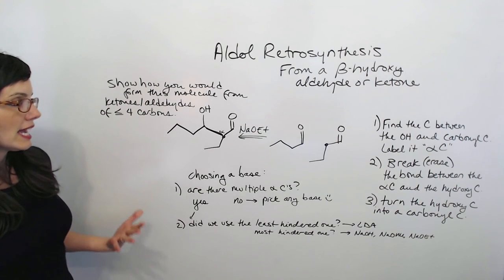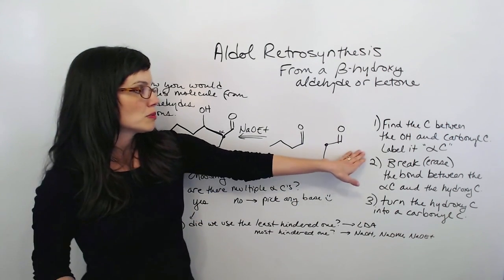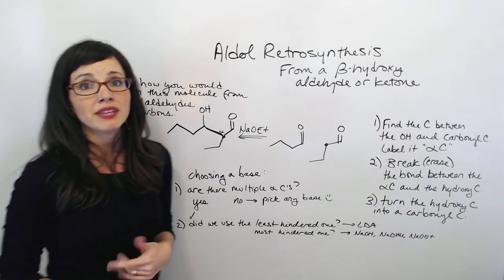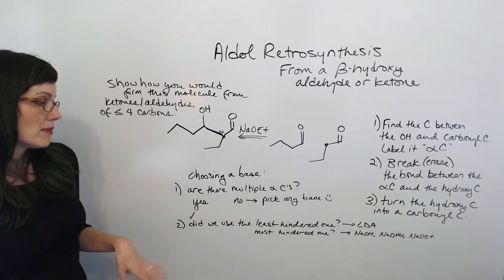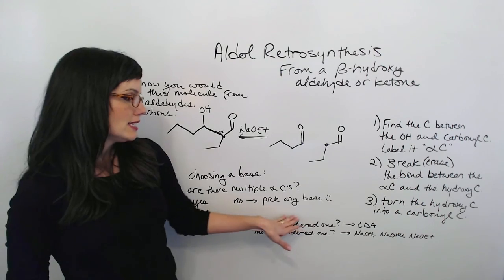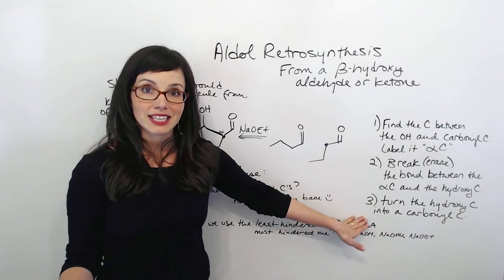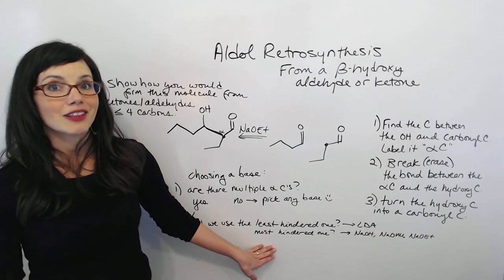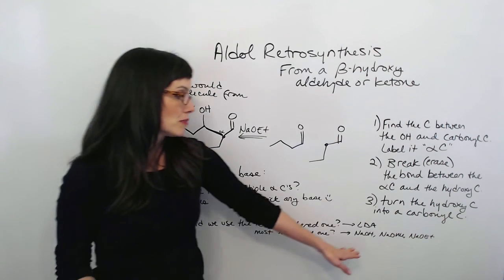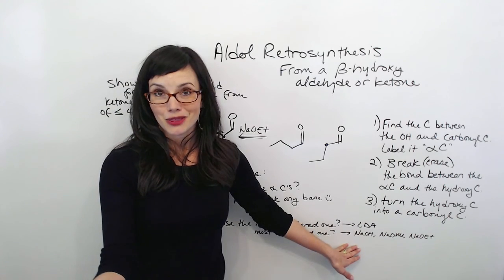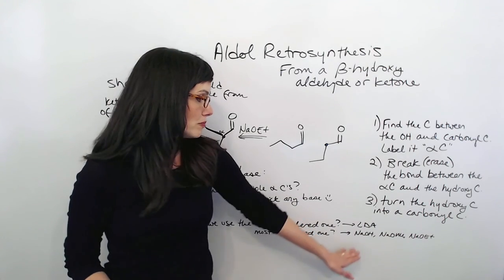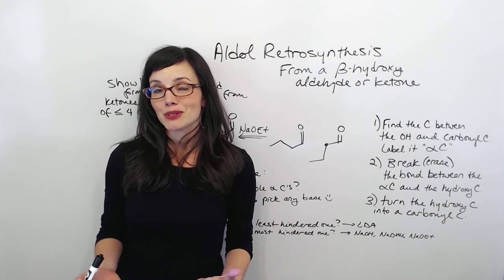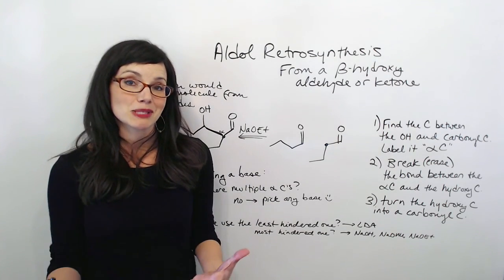However, there are going to be cases where there will be multiple alpha-carbons to choose from. When that's the case, we need to think about whether we used the least hindered one — the kinetic one — because then we've got to use LDA. Or if we chose the most hindered one, the thermodynamic one, we need to use a base that promotes the thermodynamic product. Make sure you write this down, because we're going to use this in future examples, and I'll give you some problems to practice as well.